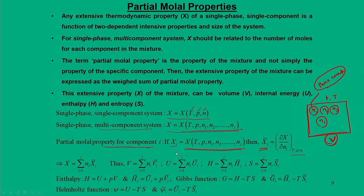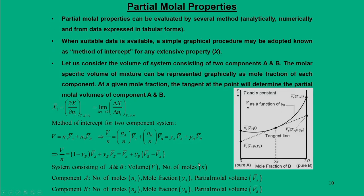This rule can be applied for volume V, internal energy U, enthalpy, and entropy. In terms of moles, n_i is the number of moles and V̄_i is the molar volume for component i. The total volume of the mixture equals the summation of each individual molar volume multiplied by moles: V = Σ n_i·V̄_i. This partial molar property definition is applicable for all properties like enthalpy, Gibbs function, Helmholtz function, and so on.